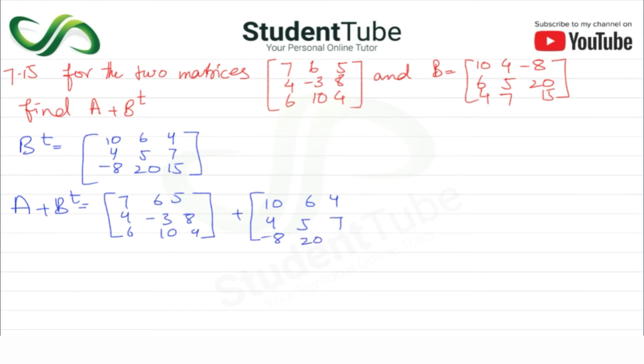Adding the corresponding elements: 7 plus 10, 6 plus 6, 5 plus 4, 4 plus 4, -3 plus 5, 8 plus 7, 6 plus -8, 10 plus 20, and 4 plus 15.